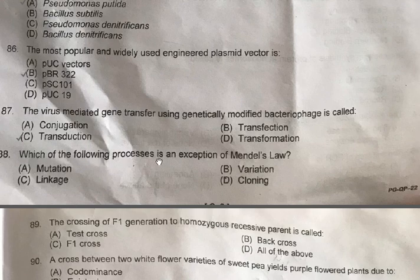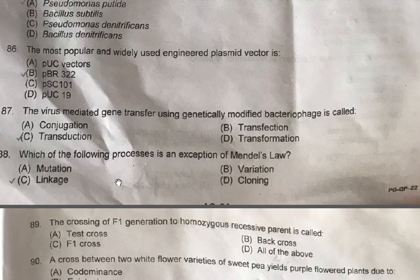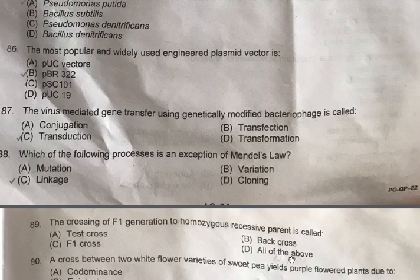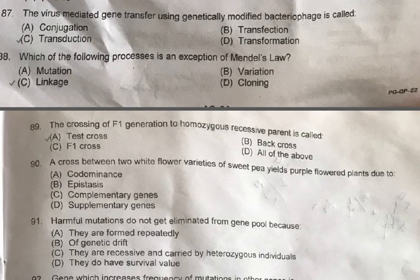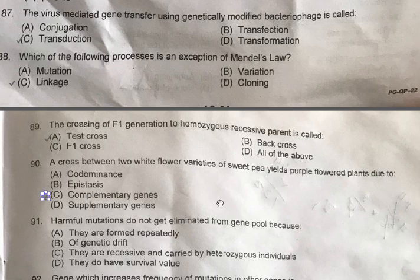Question 88: Which of the following is an exception to Mendel's law? — A: Mutation, B: Variation, C: Linkage, D: Cloning. The correct one is C, Linkage. Linkage and crossing over are exceptions to Mendel's law. Question 89: The crossing of F1 generation to a homozygous recessive parent is called — A: Test cross, B: Back cross, C: F1 cross, D: All of the above. The correct one is A, Test cross. Question 90: A cross between two white-flowered varieties of sweet pea yields purple flowers due to — A: Codominance, B: Epistasis, C: Complementary genes, D: Supplementary genes. The correct one is C, Complementary genes.